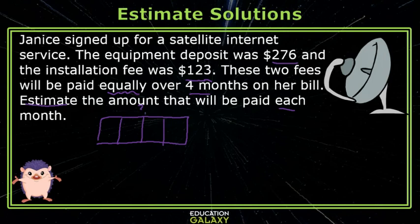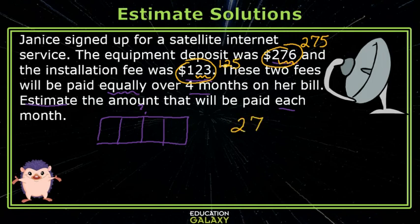But I first need to get the total — I need to know what I'm dividing over the four months. So I need to add these two expenses. Remember what I said about money? Let's think of the 276 as 275 and the 123 as 125. When I add those, it's very easy to do mentally. So this would be 300, and the 75 and the 25 make another 100 — this is 400.